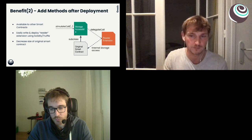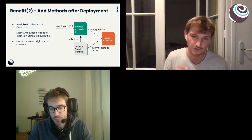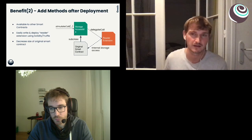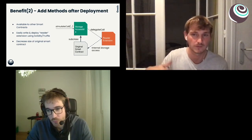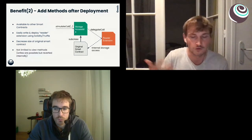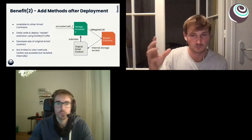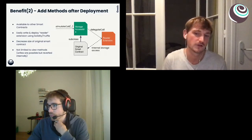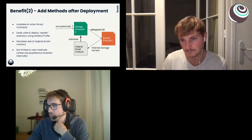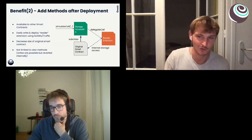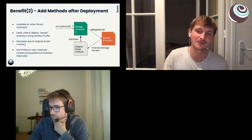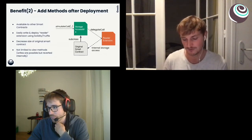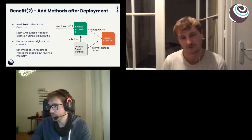Of course, none of these mutations actually persist — the delegate call is wrapped in an inner call that gets reverted, so all changes revert by the time the simulation finishes. But it allows you to do things like flip a bit, pretend you have more or less balance, then invoke a verification function and return the simulation result. The main takeaway is that the reader extension can be deployed very long after the original smart contract, making you very flexible in defining your reading needs later on.